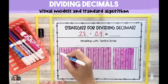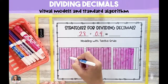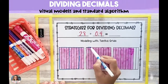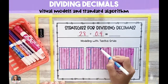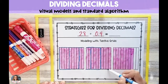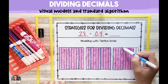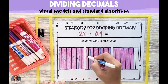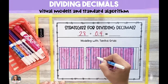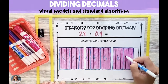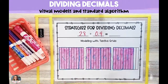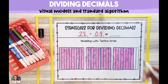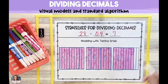Next, we're going to take our 2 and 8 tenths and split it up into groups of 4 tenths. Once you've split it up into as many groups as you can, we're going to count how many groups we were able to make. In this example, we were able to make 7 groups of 4 tenths. So 2 and 8 tenths divided by 4 tenths is 7.